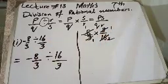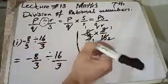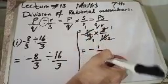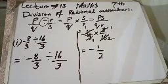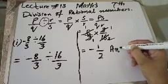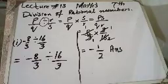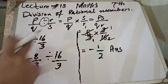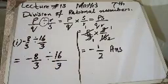तो हमारे पास divide होकर answer आया: minus 1 by 2. यहां तक करने के बाद हमें मालूम हो गया कि rational numbers को हम divide भी कर सकते हैं। जिसके लिए पहला rule क्या apply करना पड़ेगा? इसका multiplicative inverse of our divisor करना पड़ेगा, और फिर multiply - dividend को करना है according to the rule of multiplication. यह formula मैंने उपर लिख दिया है।